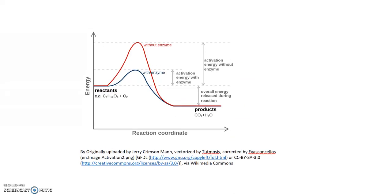If we look at the same energy diagram — with time along the x-axis as the reaction progresses, and energy increasing on the y-axis — the red line shows the amount of activation energy that would be required. This is an exergonic reaction, so energy is being released. But there's a certain amount of energy that needs to be provided to get it started. With an enzyme, following the black line, it takes much less activation energy for this reaction to go forward.